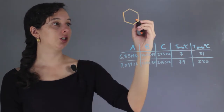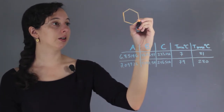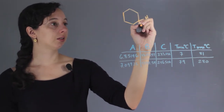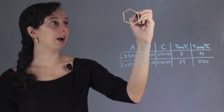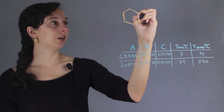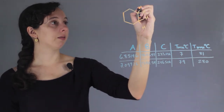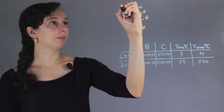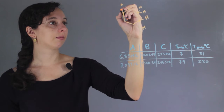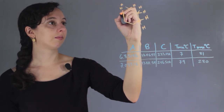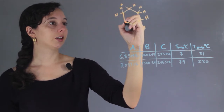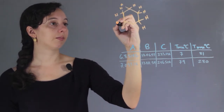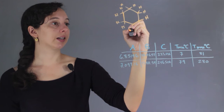And remember that each carbon here represents a carbon bonded to two hydrogens. So if we go all the way around, the complete structure looks like this.